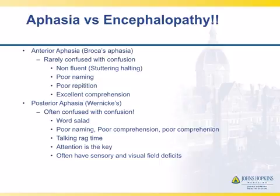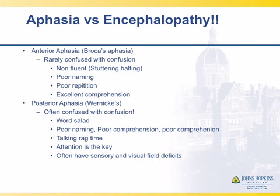A posterior aphasia is probably the one most often confused with confusion. They'll often have a word salad, poor naming, poor comprehension, poor repetition — they'll often just talk about lots of things. But attention is the key. In general, people with a Wernicke's aphasia should be able to attend to you and should not be easily distracted. They often have sensory change and a visual field cut. So in encephalopathic patients where you're not clear whether it's aphasia or encephalopathy, do the full exam, especially looking for sensory loss or visual field cuts.